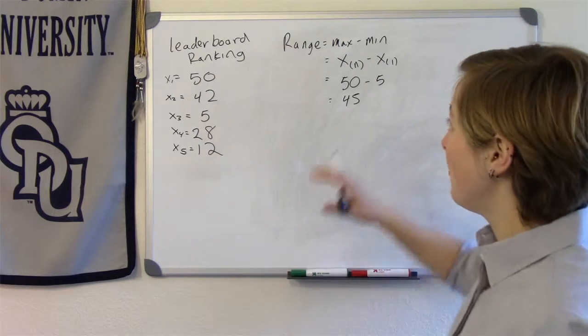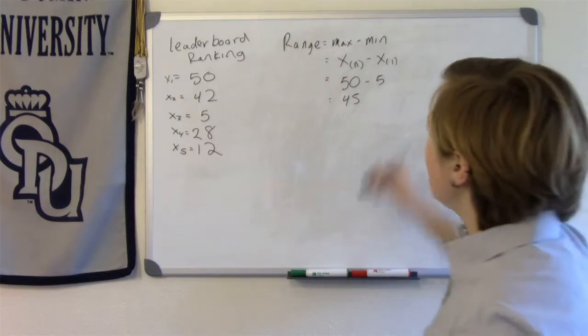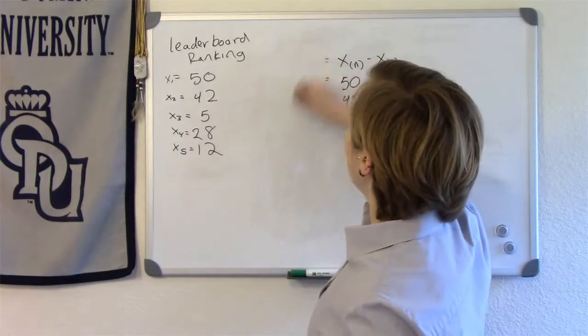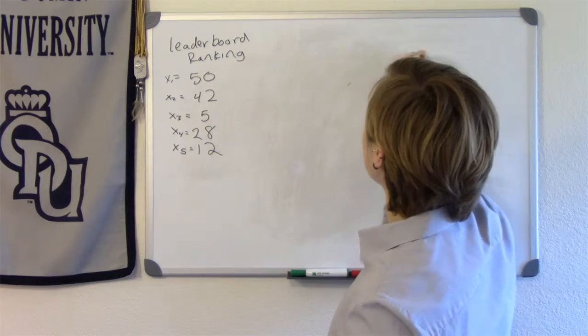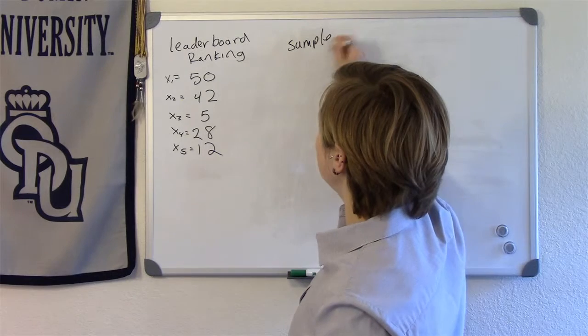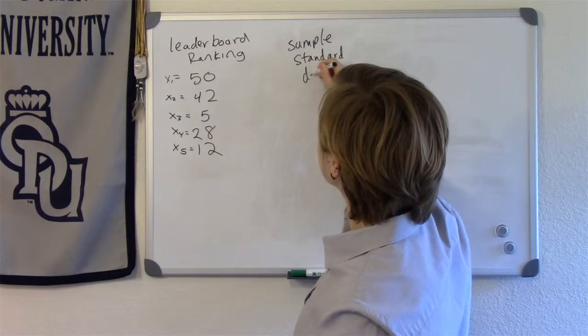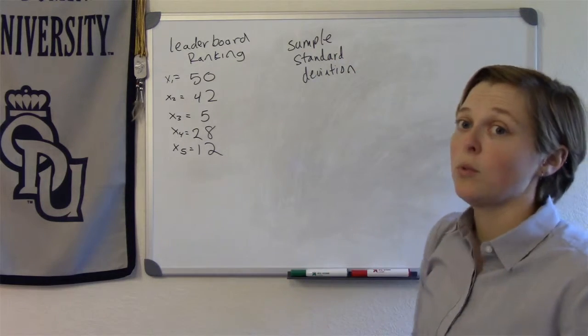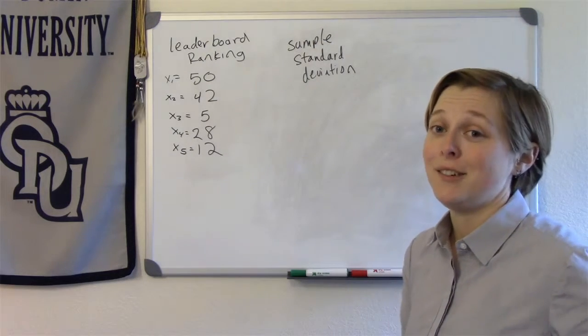So range, highly influenced by outliers, that's a big disadvantage. So instead of range, the most common measure of variation that we will use in this class will be the standard deviation. I'm going to start by talking about the sample standard deviation. This will be something you will want to commit to memory. It's a very big deal in this class.